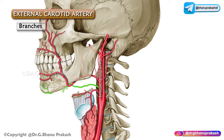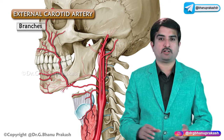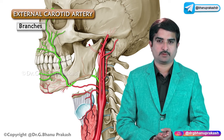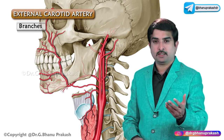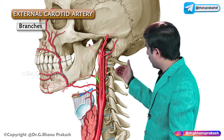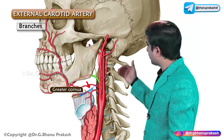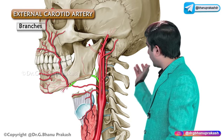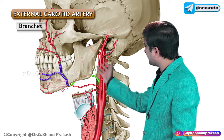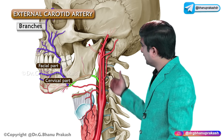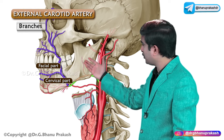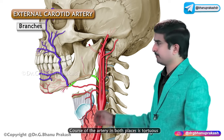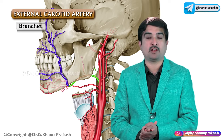The facial artery arises from the external carotid artery just above the tip of the greater cornu of the hyoid bone. It runs upwards first in the neck as the cervical part, and on the face as the facial part. The course of the artery in both places is tortuous, and the facial artery will be discussed in detail in a separate module.